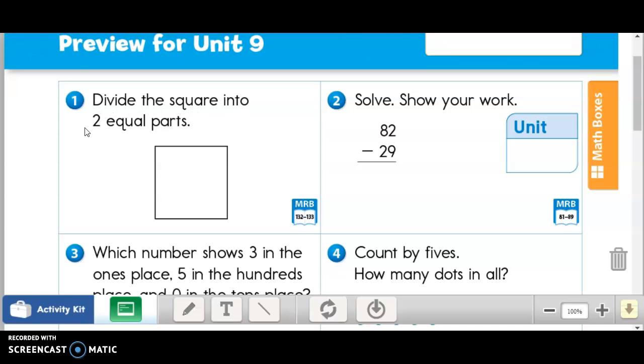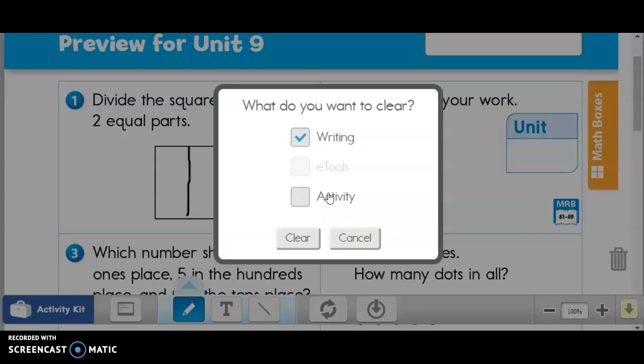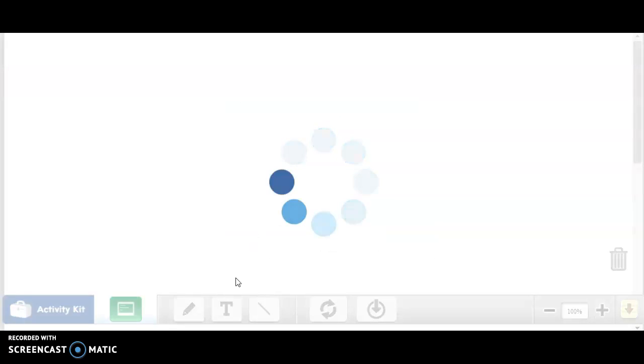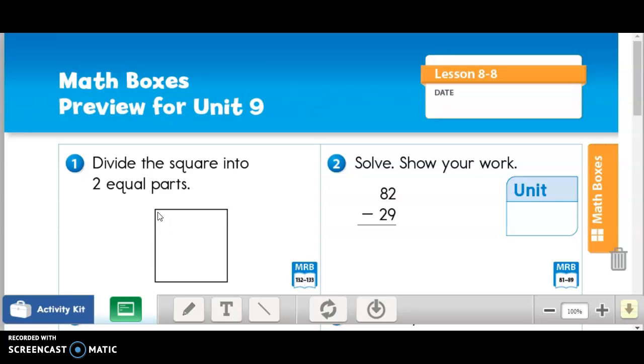Divide the square into two equal parts. I think you could have some variety there, friends. I think you could put it in half this way. But I also think you could try it this way, couldn't you? Also diagonally, either one there.